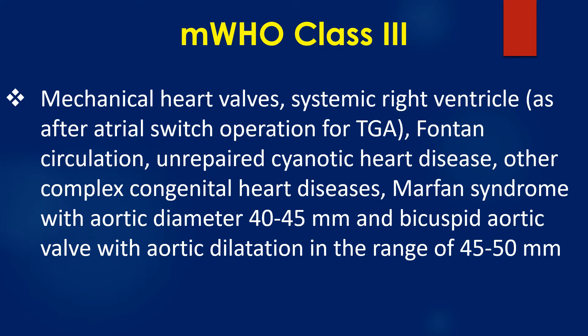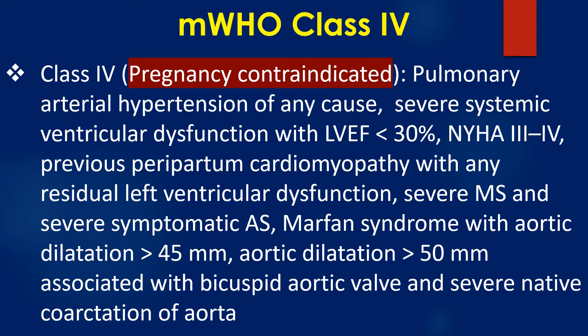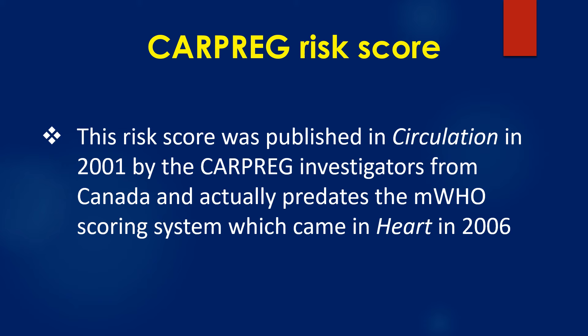Class 4, where pregnancy is contraindicated, includes pulmonary arterial hypertension of any cause, severe systemic ventricular dysfunction with ejection fraction below 30% and NYHA functional class 3–4, previous peripartum cardiomyopathy with any residual left ventricular dysfunction, severe mitral stenosis, severe symptomatic aortic stenosis, Marfan syndrome with aortic dilatation more than 45 mm, aortic dilatation more than 50 mm with bicuspid aortic valve, and severe native coarctation of aorta.